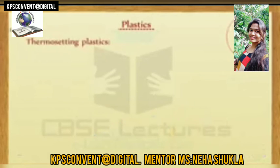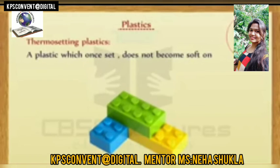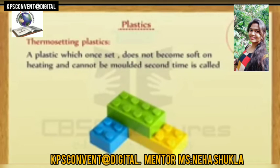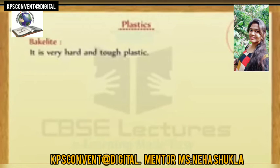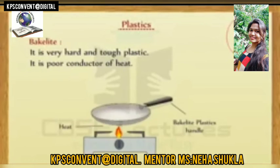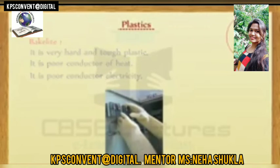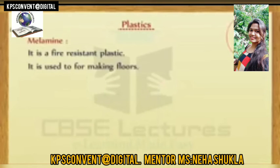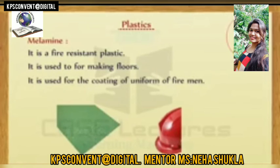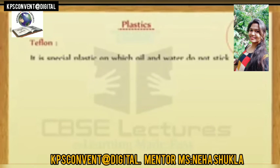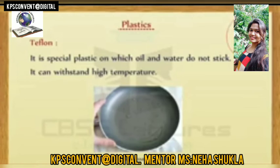Thermosetting plastics: a plastic which once set does not become soft on heating and cannot be molded a second time is called thermosetting plastic. Examples include bakelite, melamine, and teflon. Bakelite is very hard and tough plastic, a poor conductor of heat, so it is used for making handles of cooking utensils. It is a poor conductor of electricity, so it is used for making electric switches and plugs. Melamine is a fire-resistant plastic used for making flooring tiles and for coating the uniforms of firemen. Teflon is a special plastic on which oil and water do not stick. It can withstand high temperatures and is used for providing non-stick coating on cookware and the bottom of electric irons.